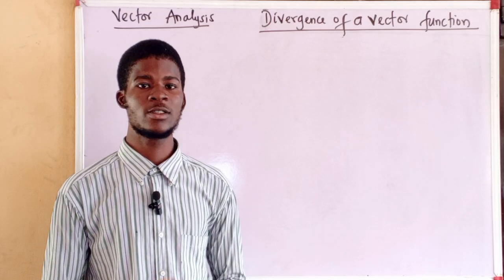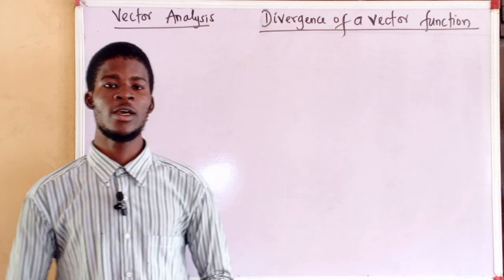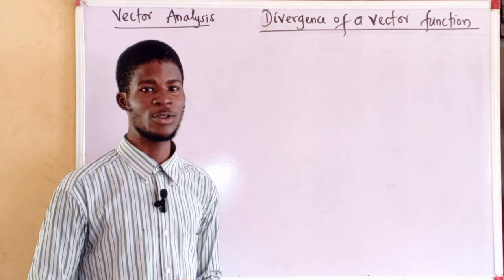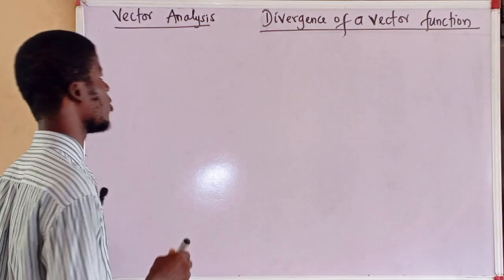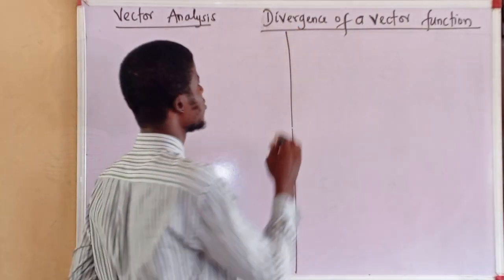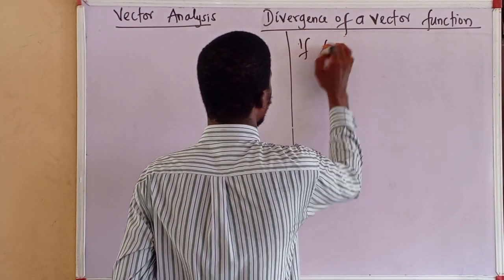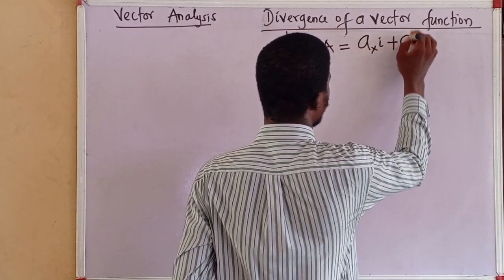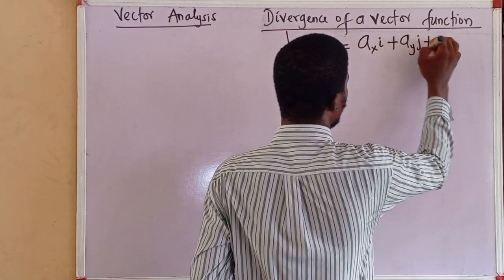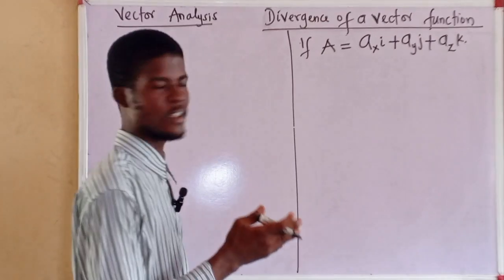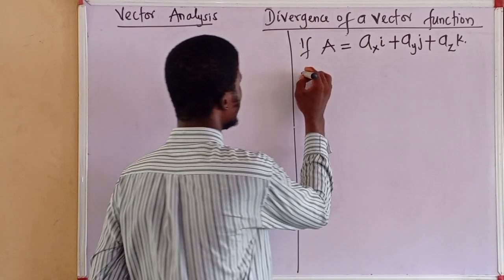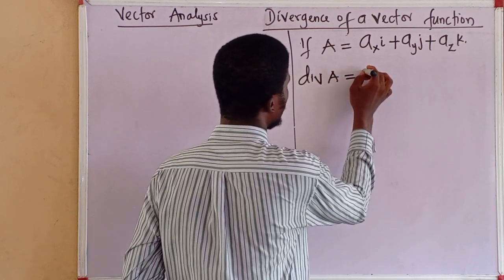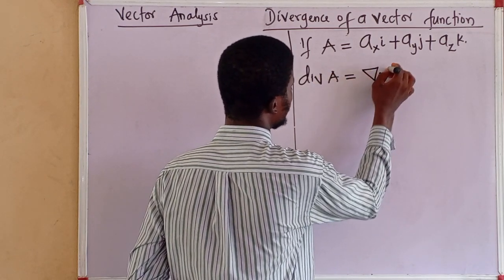Still on vector analysis and vector calculus. In this video I'm going to talk about the divergence of a vector function. If I have a vector function A equal to Ax·i plus Ay·j plus Az·k, the divergence of vector A, div A, is equal to del dot A.